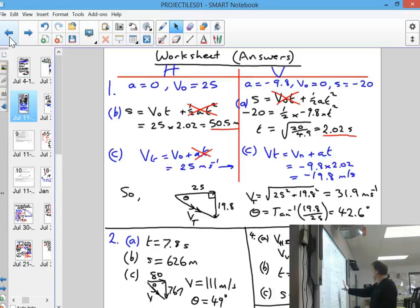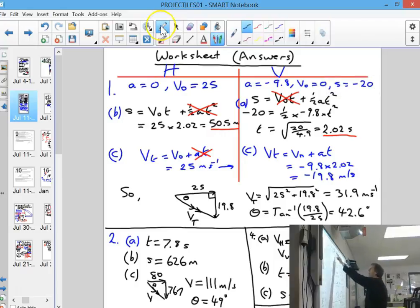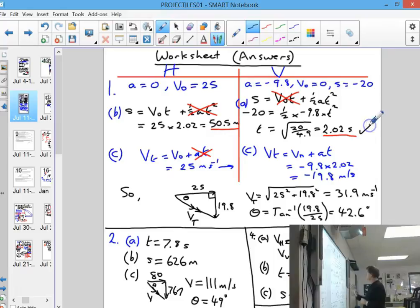Question one indicates that I started over on part A there, and I looked at the vertical components. I had acceleration minus 9.8, velocity was zero at the start, and displacement was going down minus 20. Based on that, you can rearrange to find the time.